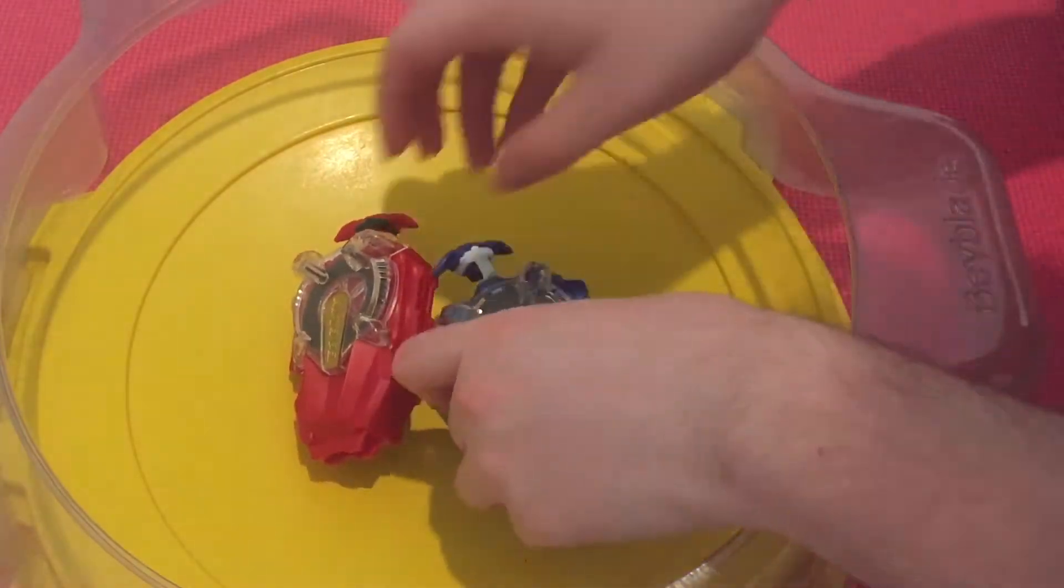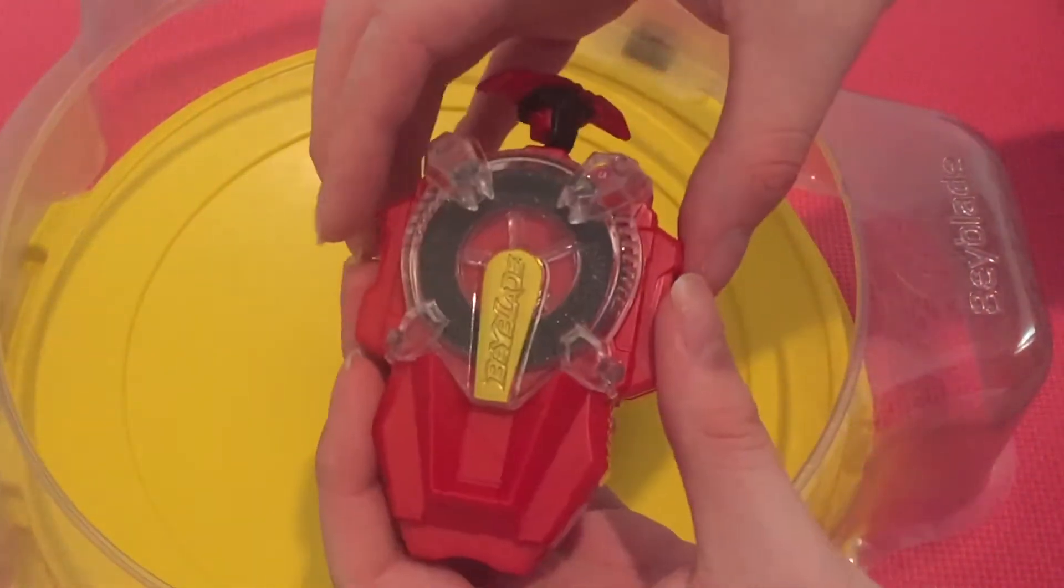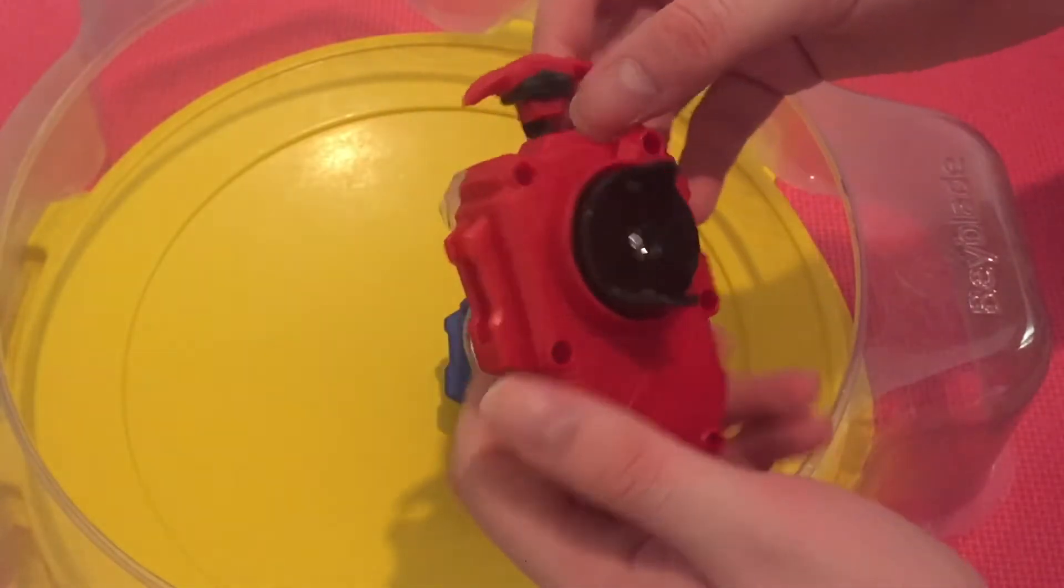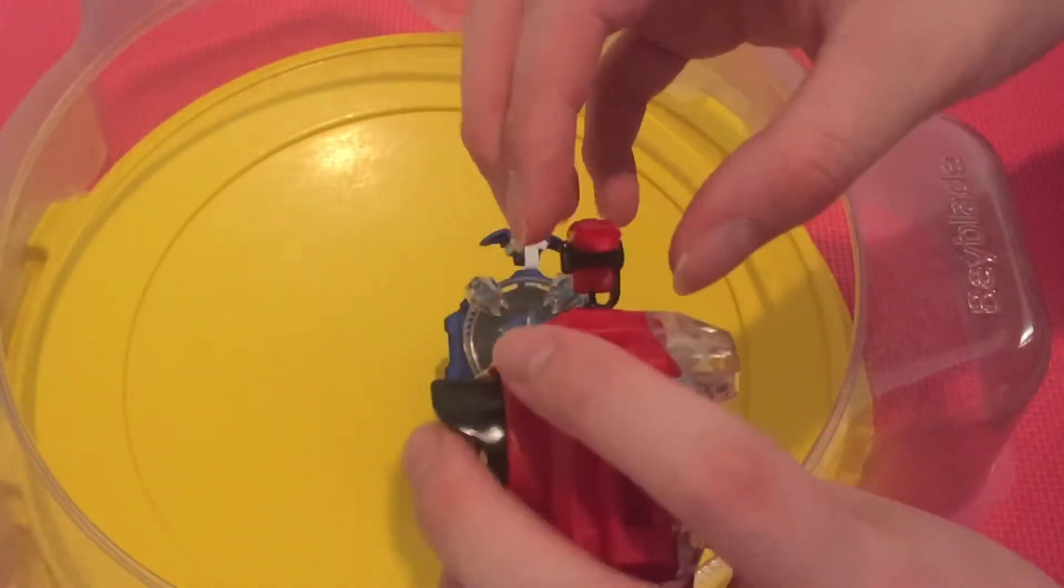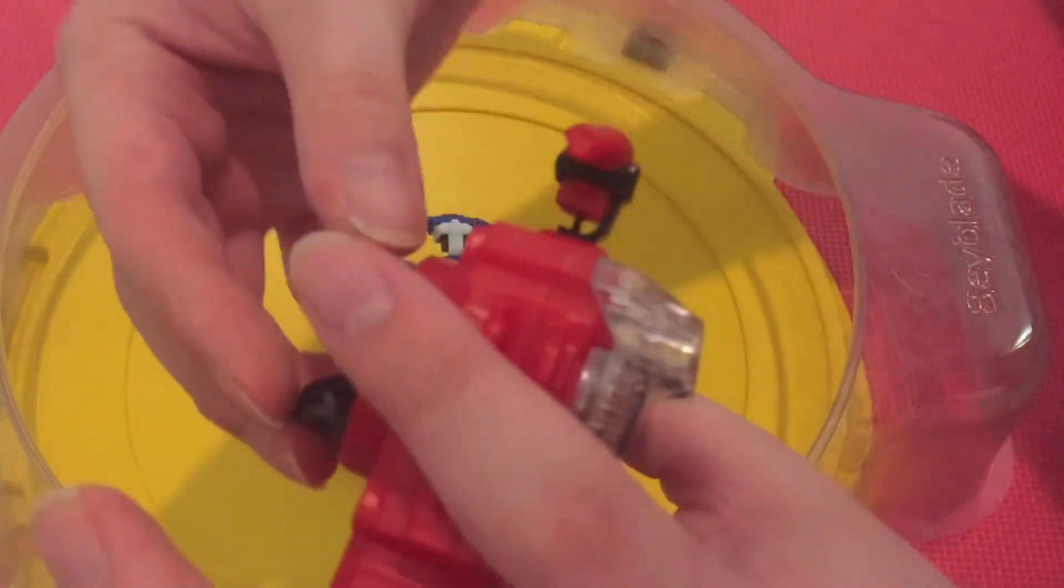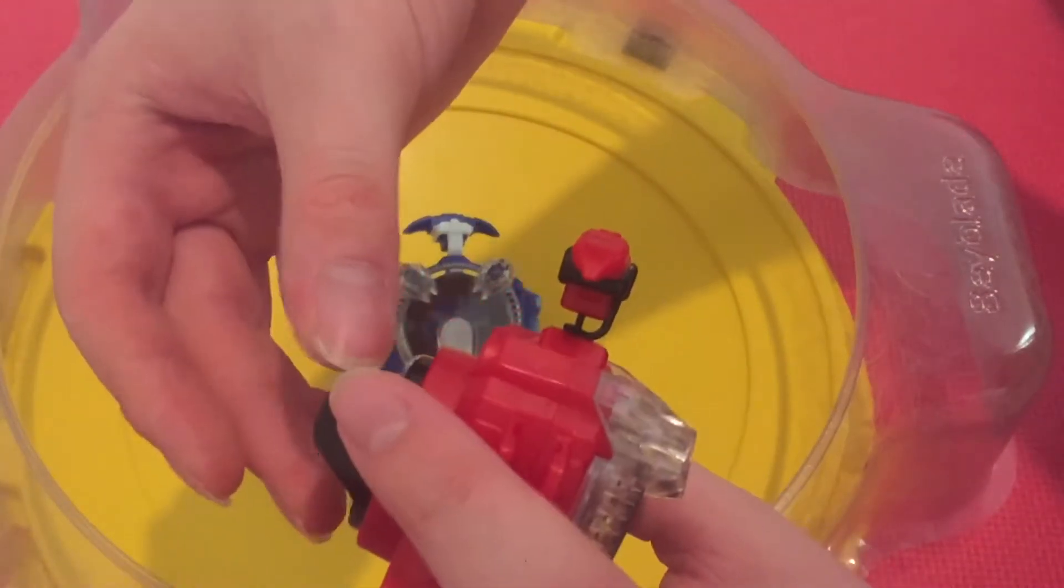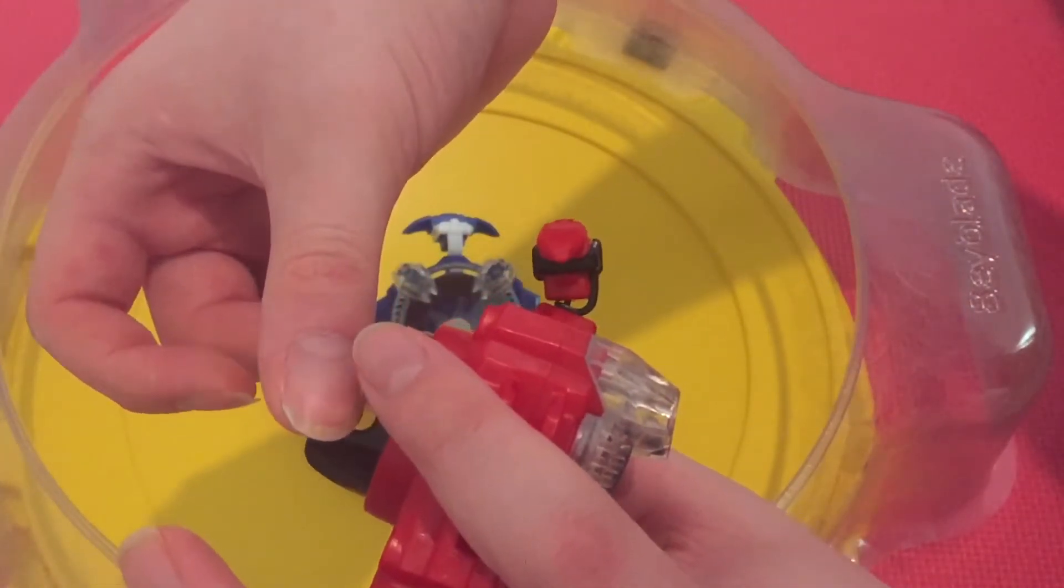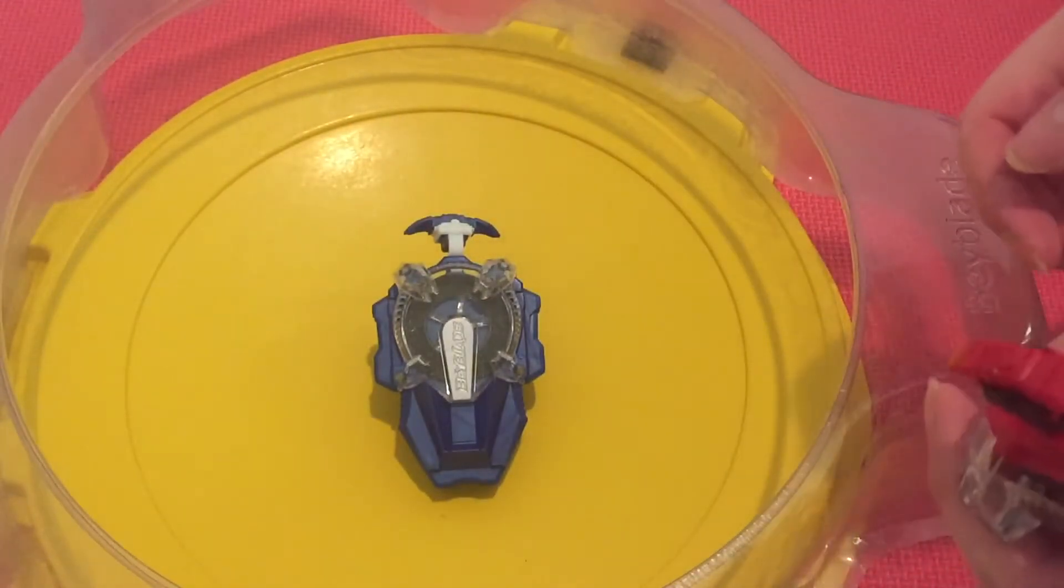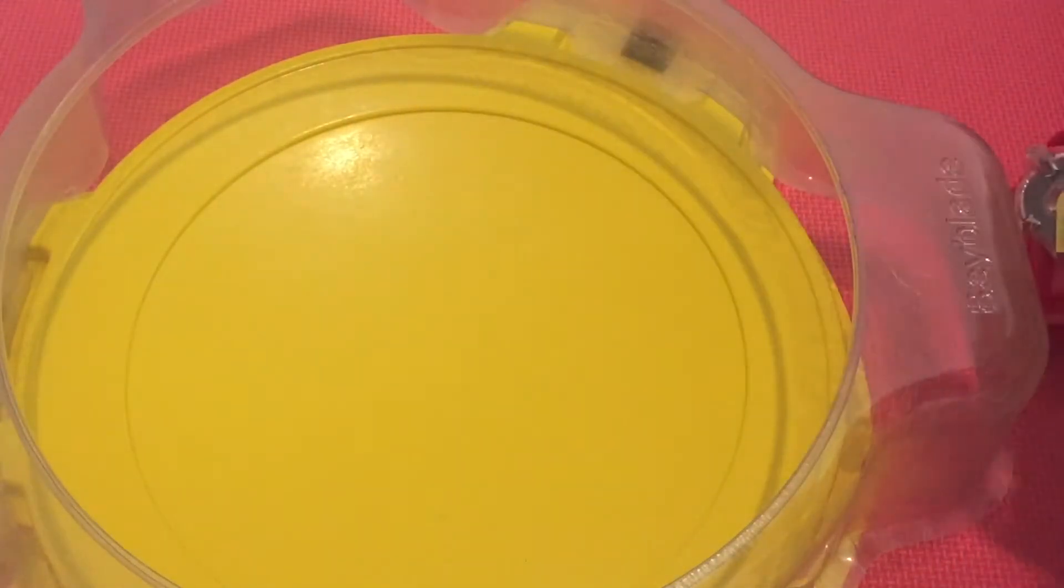Okay here they are. So the right spin one is mainly red with gold and black highlights. Also it has this, both of them have this piece that lets you know when you twist it enough, so it'll stop you like that. That way you're not grinding too much on the launcher and breaking the gears.